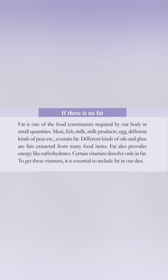Different kinds of oils and ghee are fat extracted from many food items. These include sunflower oil, palm oil, coconut oil, olive oil, and different kinds of oils. This is ghee — they are extracted from many food items.